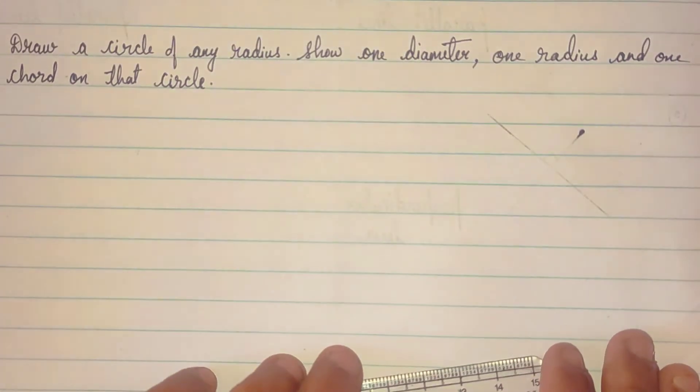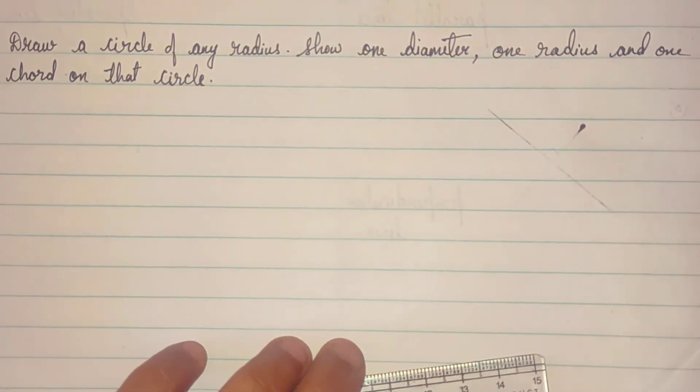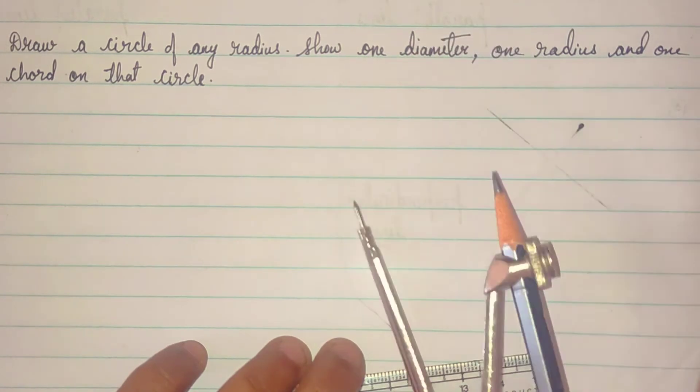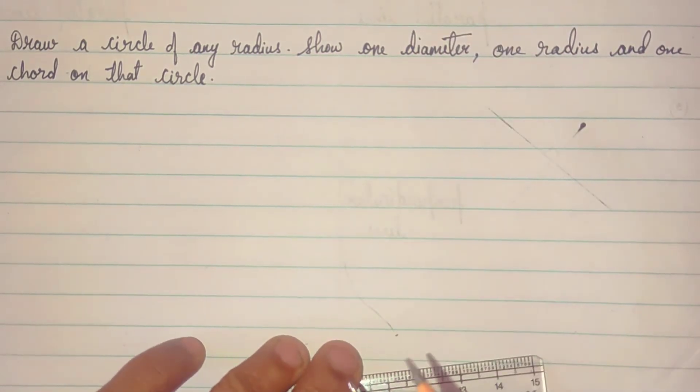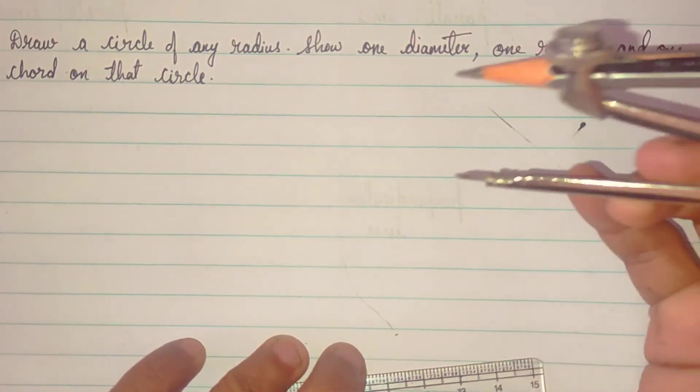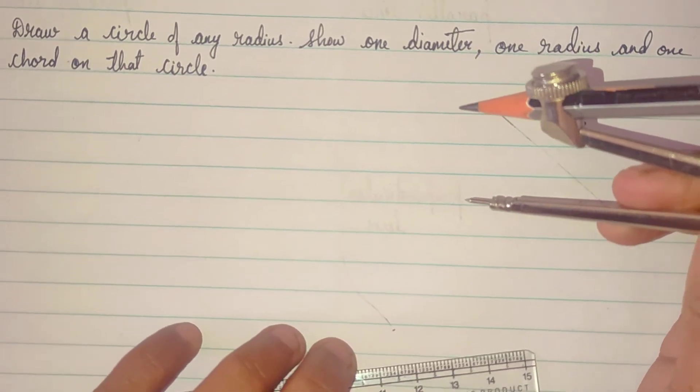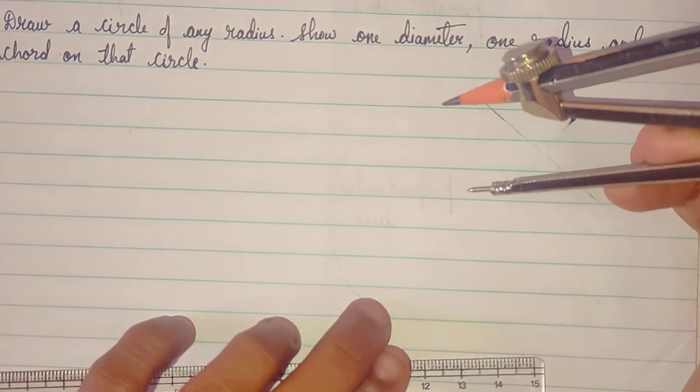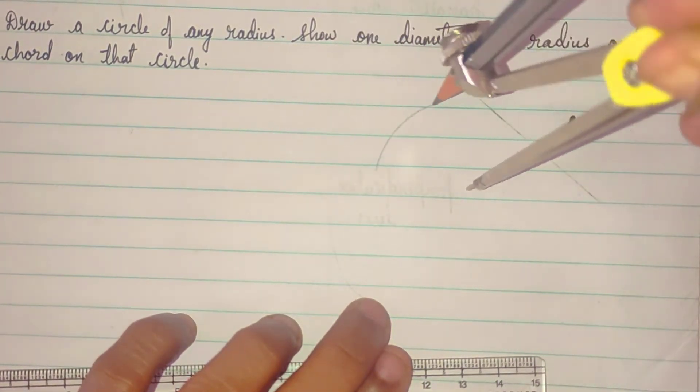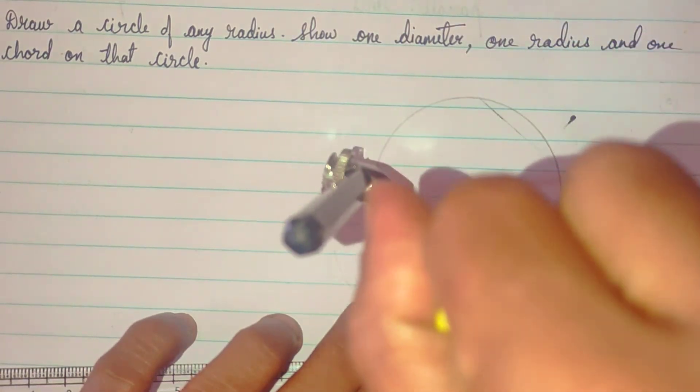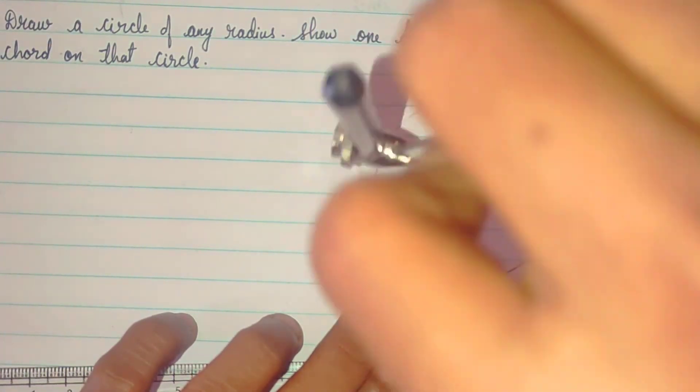Second question. Draw a circle of any radius. Show one diameter, one radius, and one chord of that circle. So, apne manse, koi bhi measure ka circle banane bola hai. So, you can draw simply any circle.